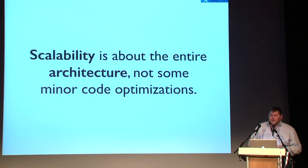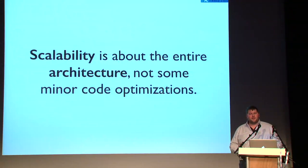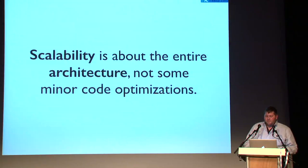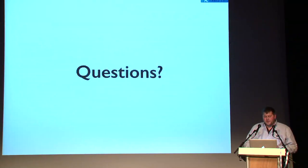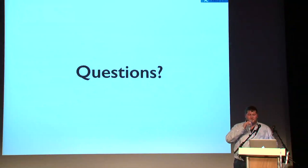Scalability is about the entire architecture, not minor code optimizations like single quotes versus double quotes or string concatenation — all that stuff is fixed at compile time anyway. The best practices are in the architecture: how everything is glued together. Using background tasks and queues will get you much more than switching to single quotes.